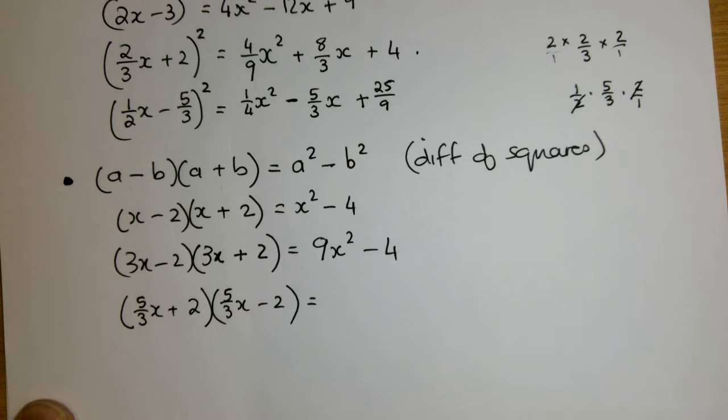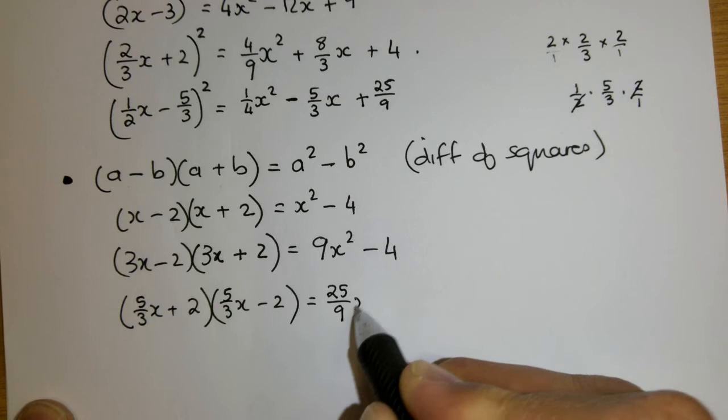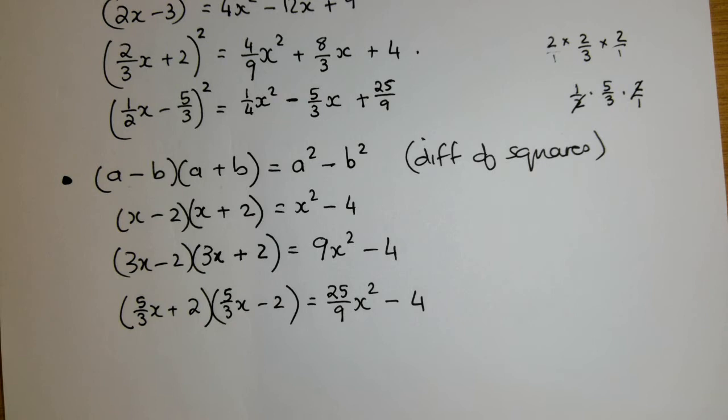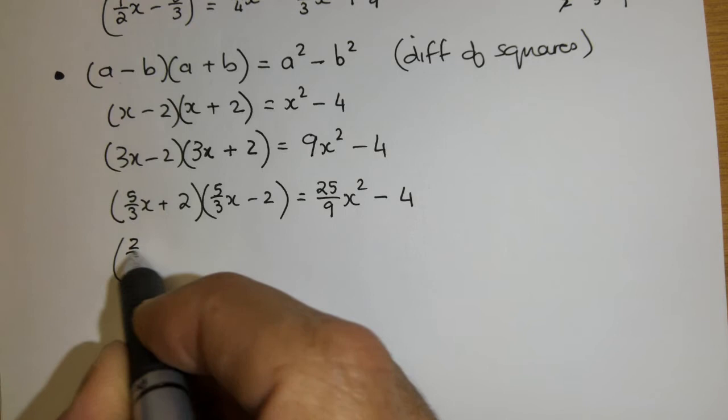It's the difference of squares. So it's 5 over 3, which is squared, to become 25 over 9x squared minus the second term squared, which is 4. Okay, so folks, I'm sure you'll agree with me. Not that difficult.